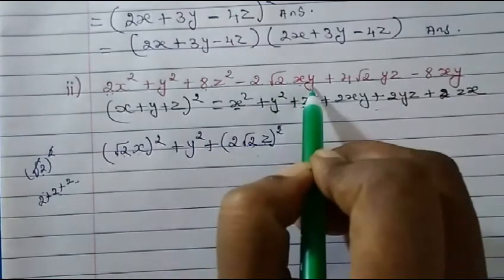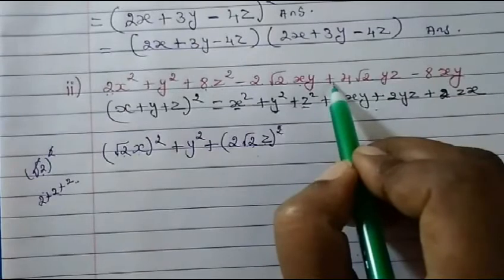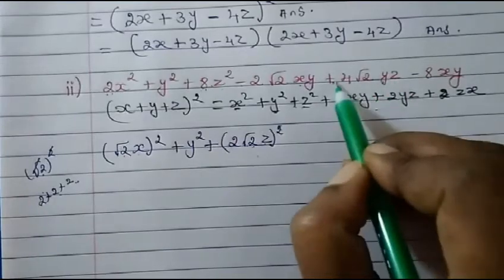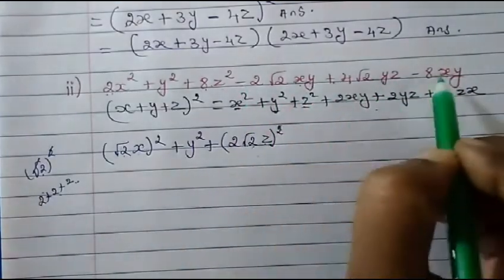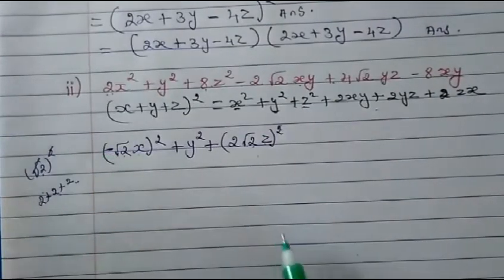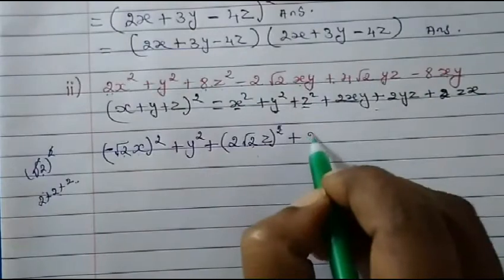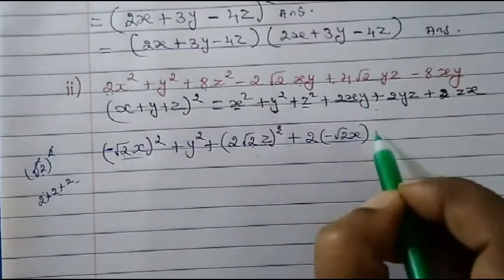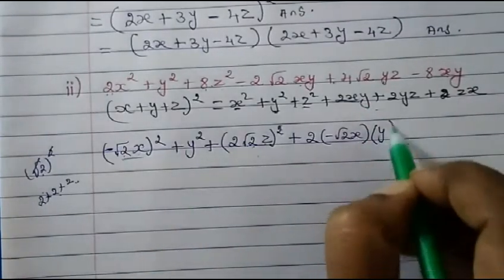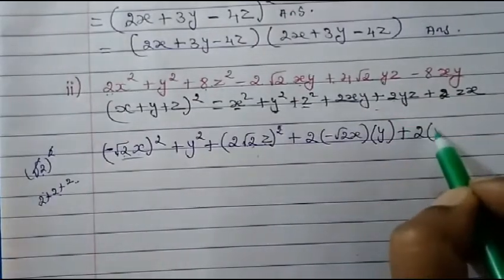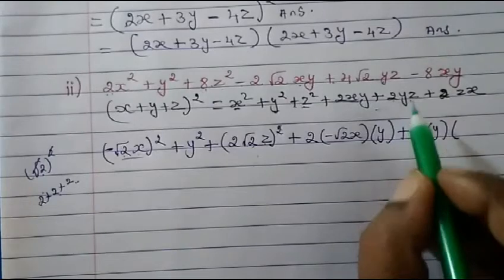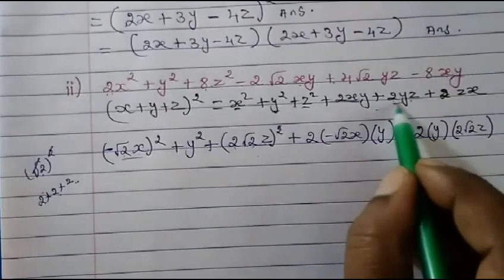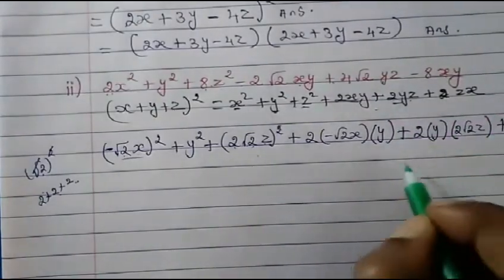Now here we see a negative sign is coming somewhere. Looking at the terms: y is positive, z is also positive, which means x is the one carrying the negative value. So wherever x appears, we put the negative value. The x value is minus √2 x, y value is just y, and z value is 2√2 z.